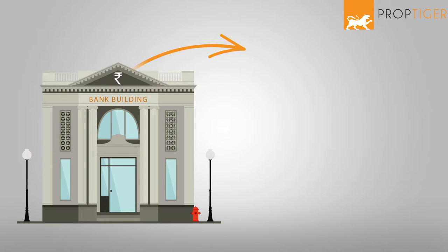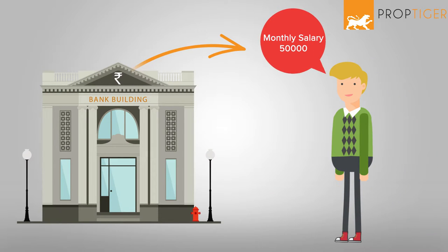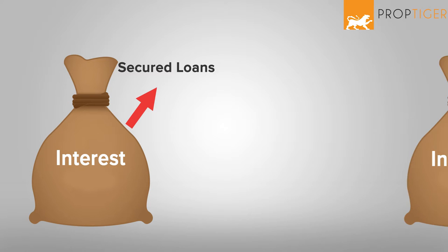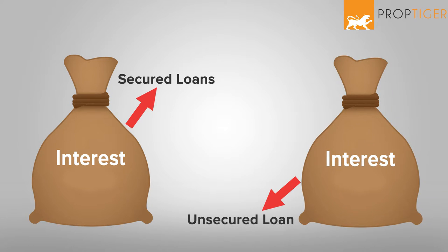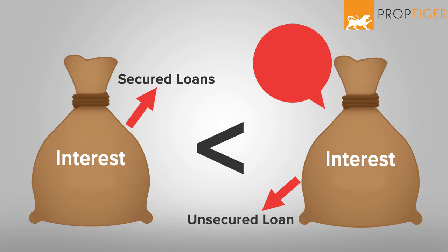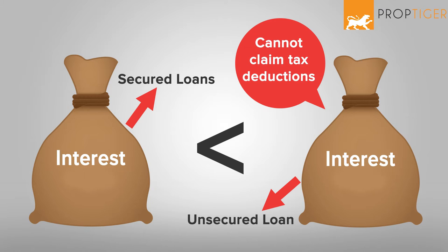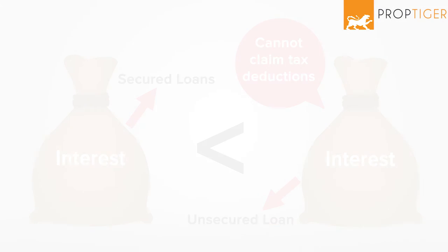Banks issue unsecured loans entirely on the basis of your creditworthiness. Because there is no guarantee kept against the loan, the interest rates charged are also higher than those for secured loans. Also, unlike a secured loan, you cannot claim tax deductions on the interest that you pay on an unsecured loan.